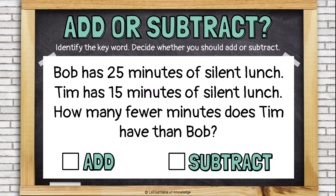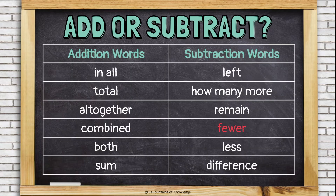Bob has 25 minutes of silent lunch. Tim has 15 minutes of silent lunch. How many fewer minutes does Tim have than Bob? The word 'fewer' suggests that we need to subtract to find the difference between how long Bob has to spend in silent lunch and how long Tim has to spend in silent lunch. Fewer usually means to subtract.